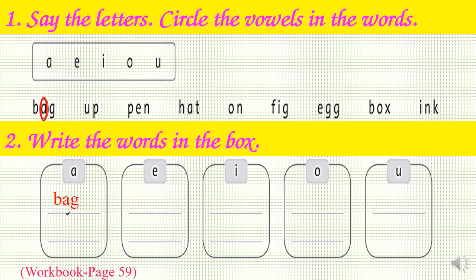And vowels: vowel A, vowel E, vowel I, vowel O, vowel U. For the second part, circle the vowels in the words. There are some words here: bag, up, pen, hat, on, big, egg, box, ink. You have to circle the vowel for each word. For example, the word 'bag' — I can see vowel A, so I circle it. Now you have one minute to do it.